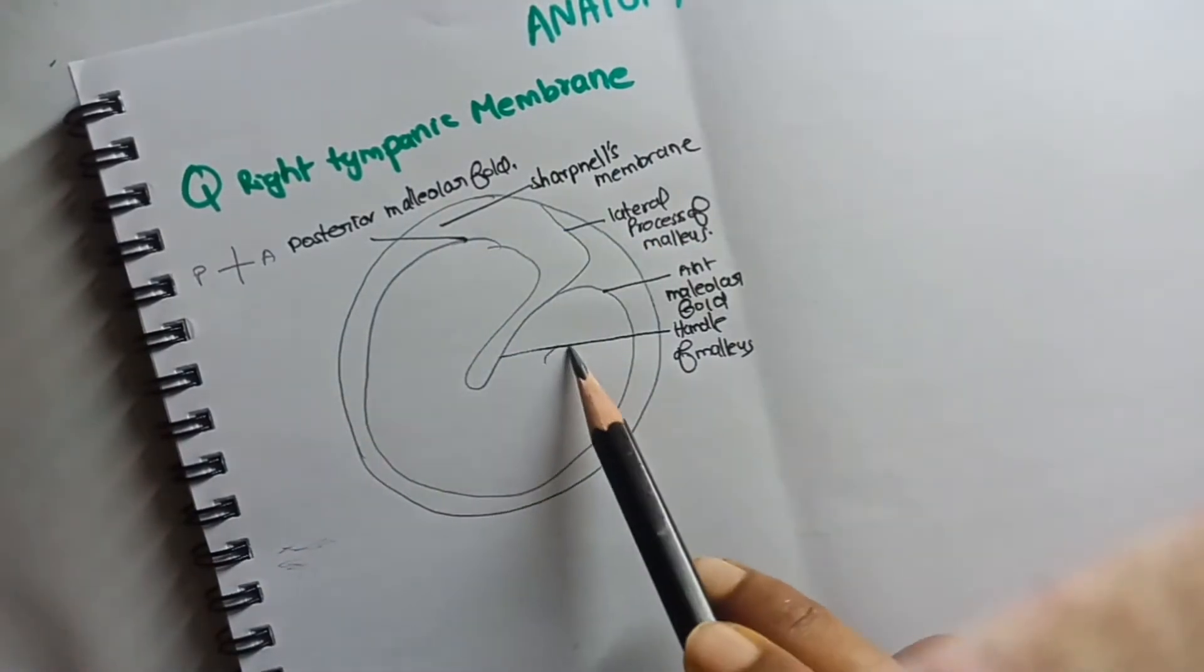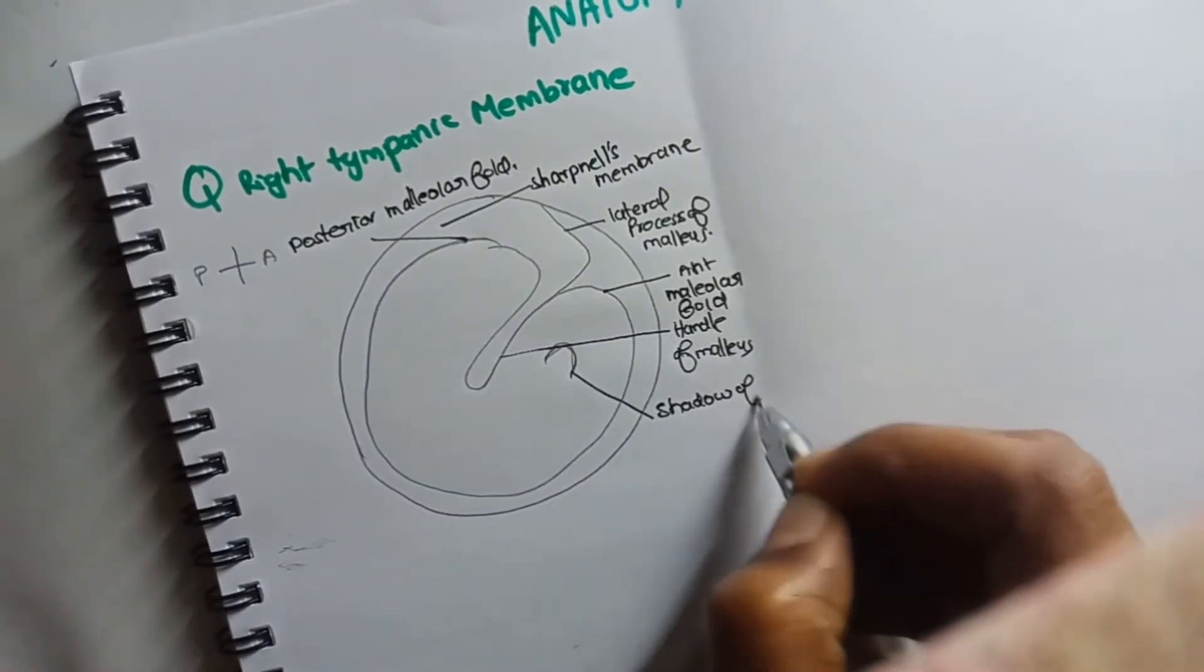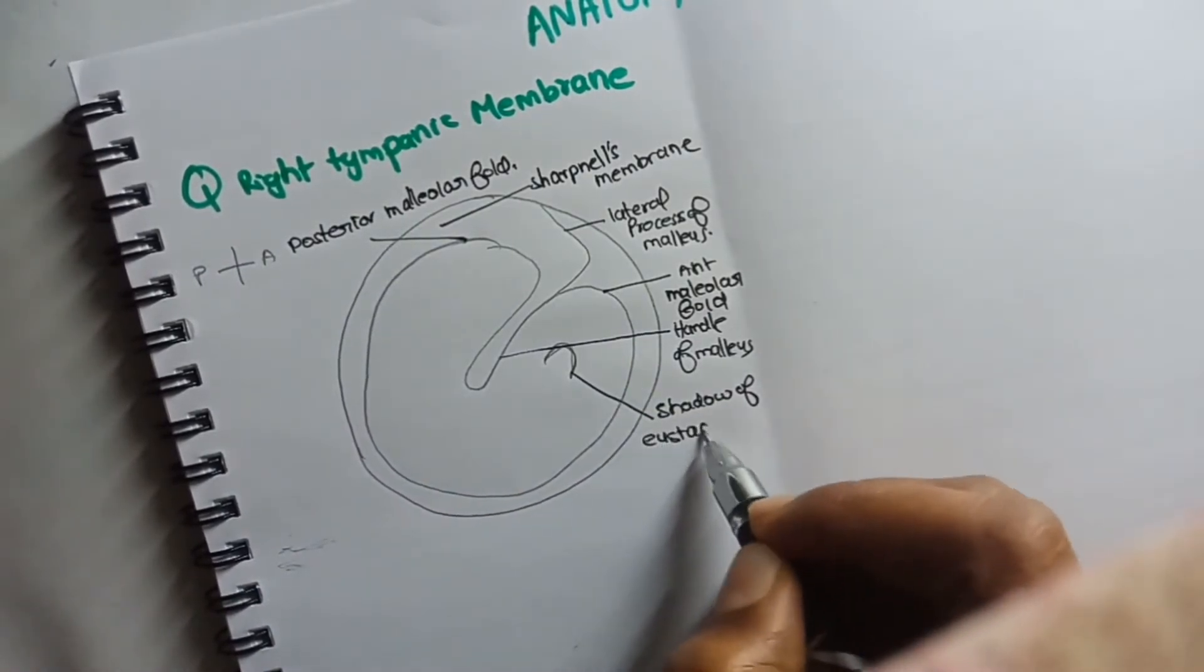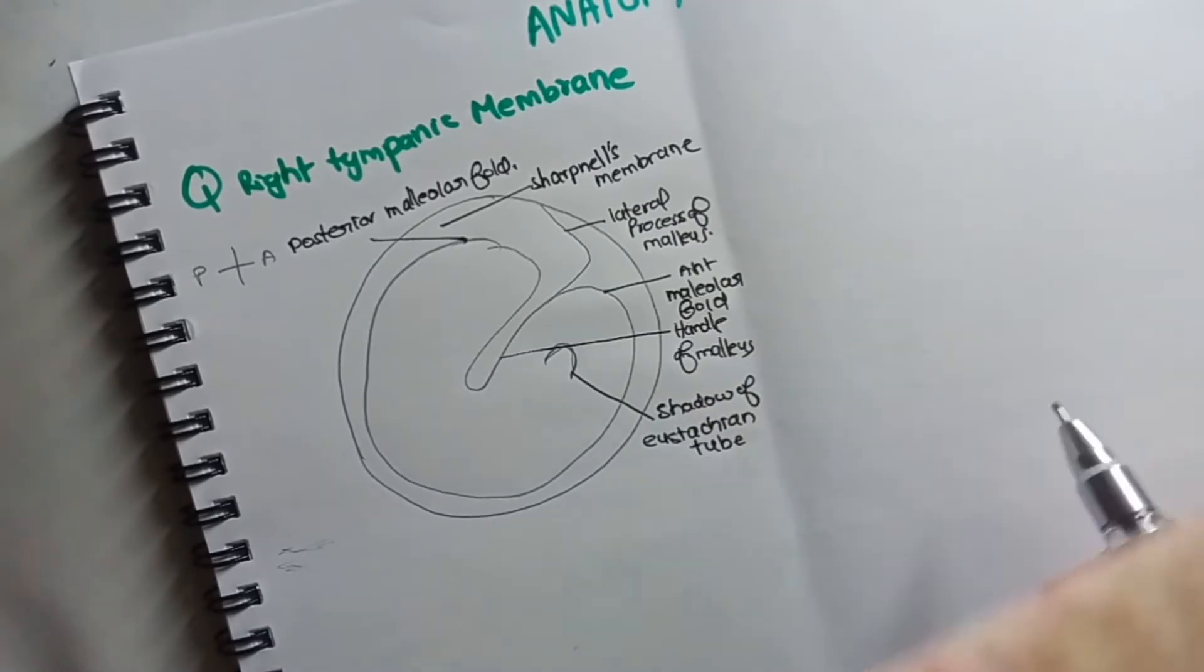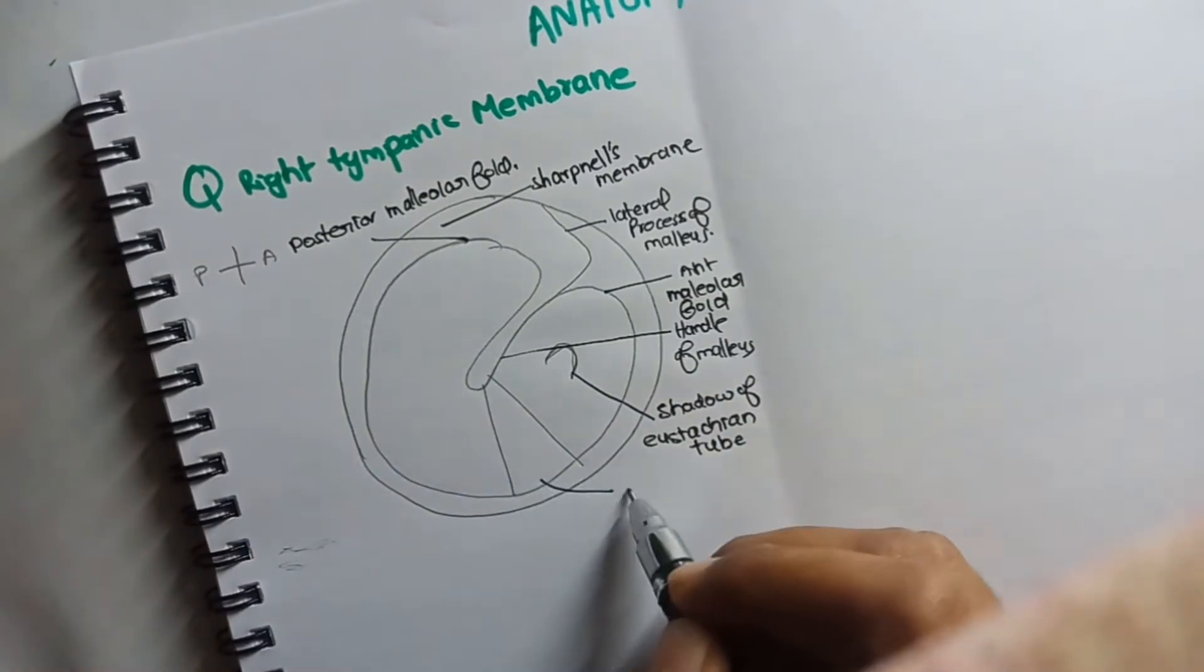Now in the anterosuperior quadrant we can find the shadow of the eustachian tube. Now we know there will be a cone of light, which is the light getting reflected on the tympanic membrane.